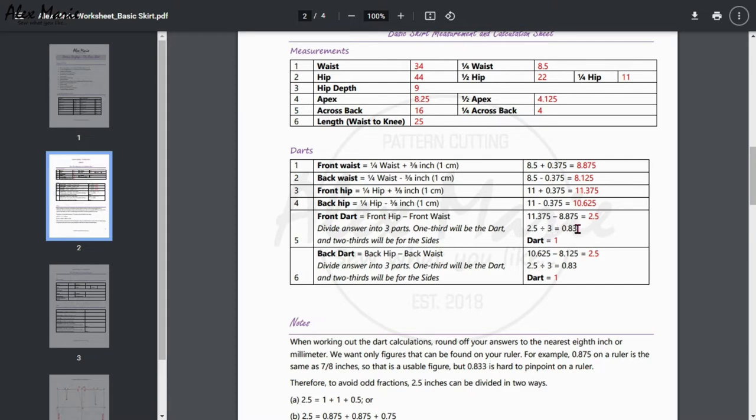You can just round it off to the nearest eighth of an inch or a whole number, whichever is convenient. Because that's a hard number to divide anyway. For back dart, you need back hip minus back waist. Same protocol: divide your answer into three and use that for the dart.